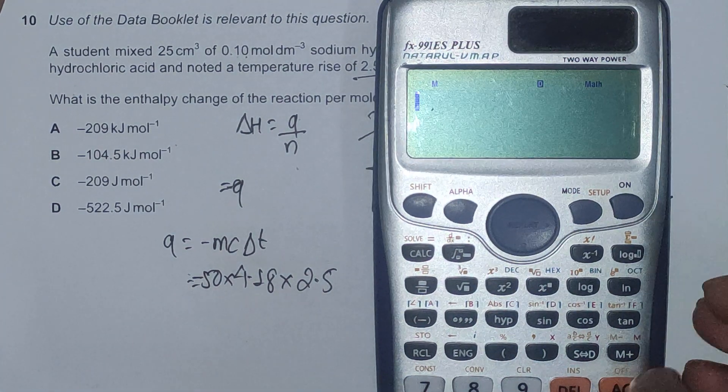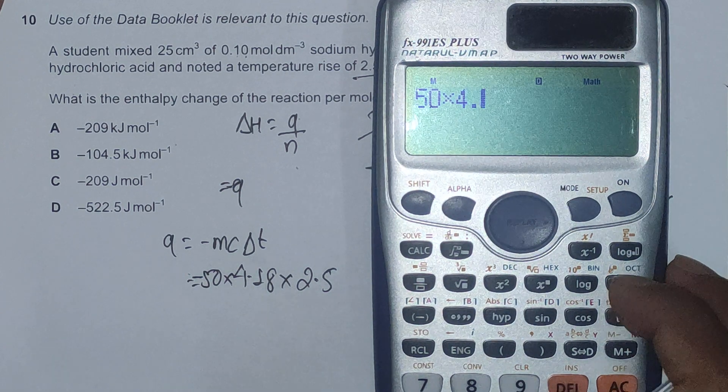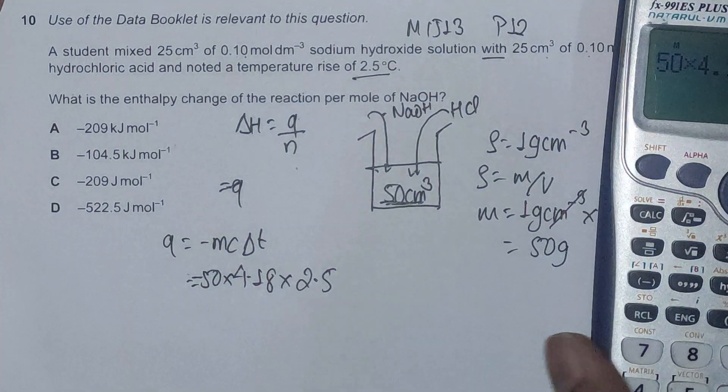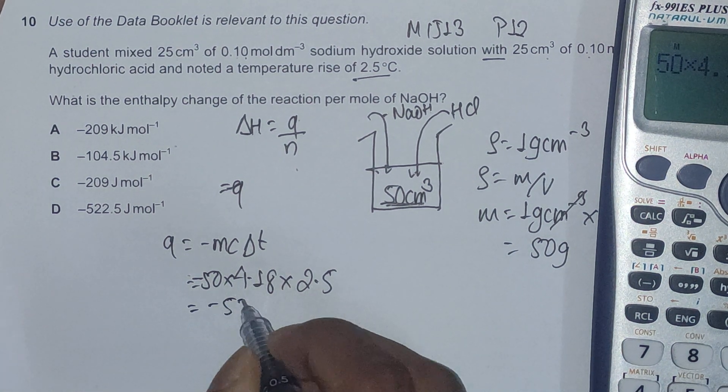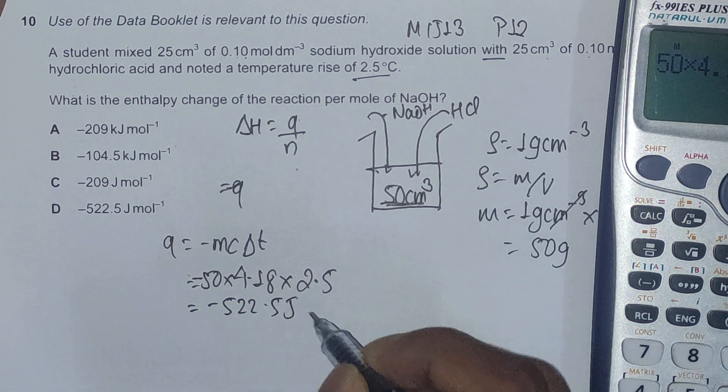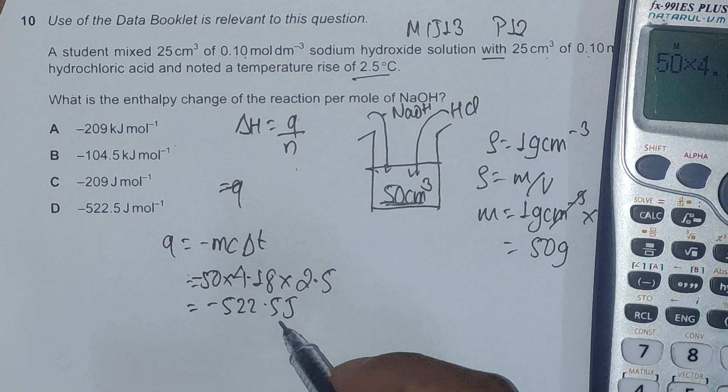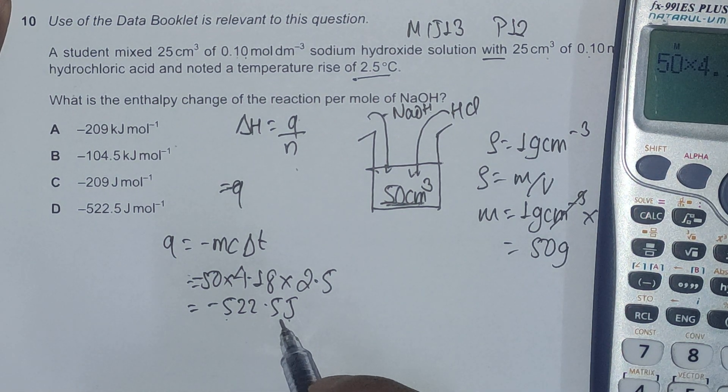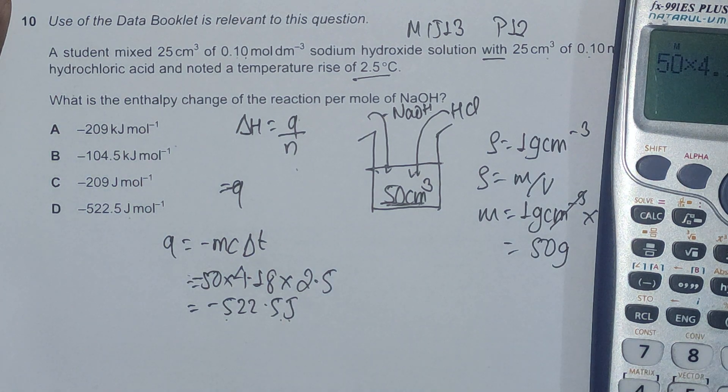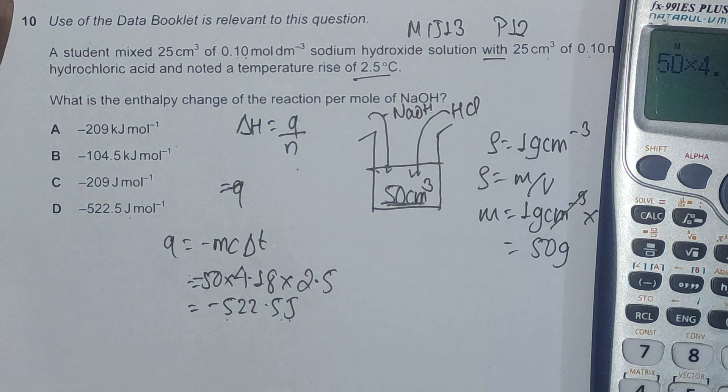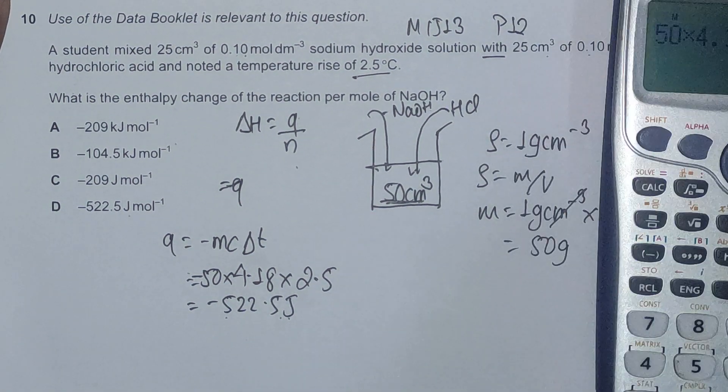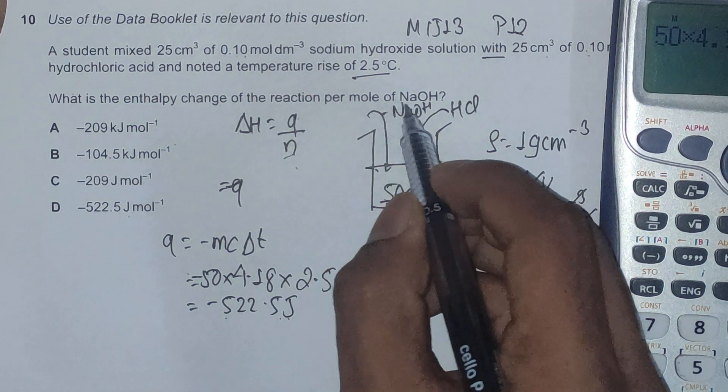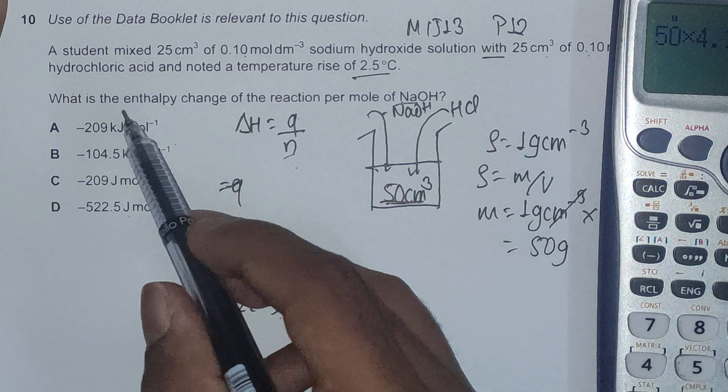Since the total energy released is negative 522.5 joules, this option should be fairly incorrect, although we're not rejecting this right now. The other thing we have to do is calculate the number of moles of NaOH, because the question asks what is the enthalpy change of the reaction per mole of NaOH.